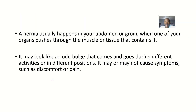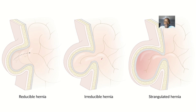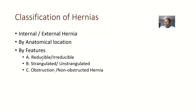First of all, let's define what a hernia is. A hernia usually happens in your abdominal groin area. This is when one of your organs pushes through the muscles or tissues that were actually holding it back. It may look like a bulge that comes and goes, and that's the classification of what hernia is based on reducibility or irreducibility.